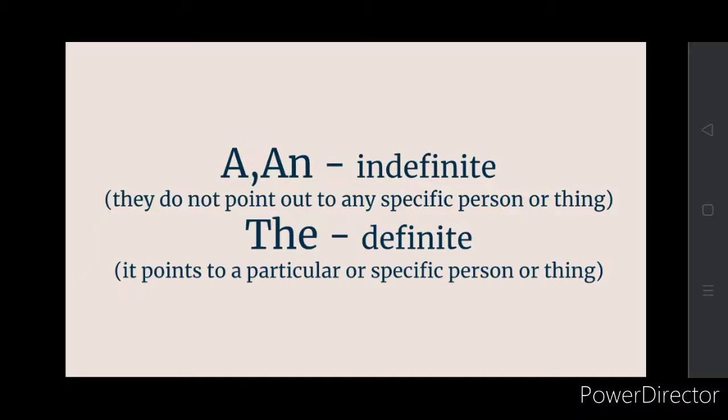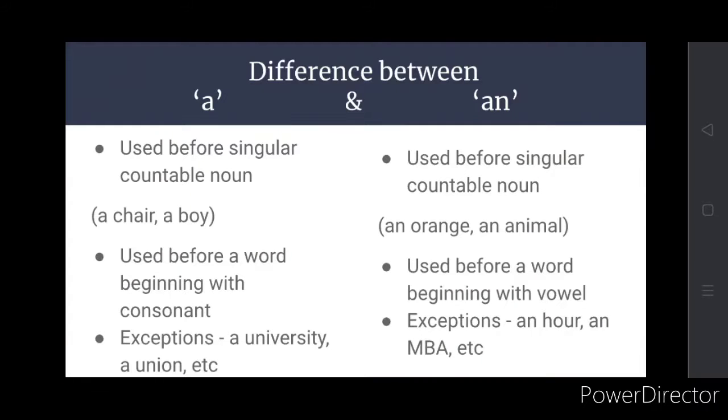Whereas the is a definite article and it points out to a particular or specific person or thing. There is a difference between a and an. So let's see what's the difference.